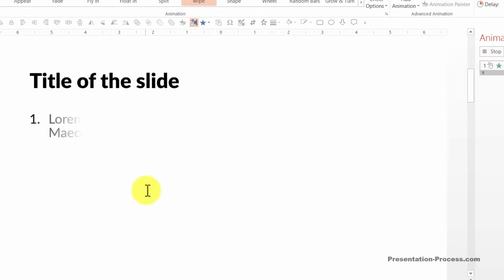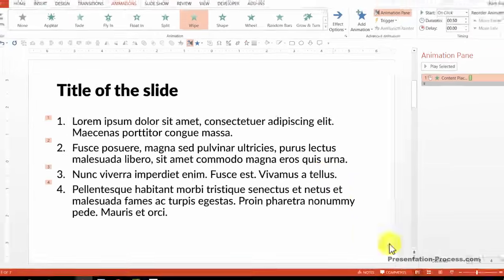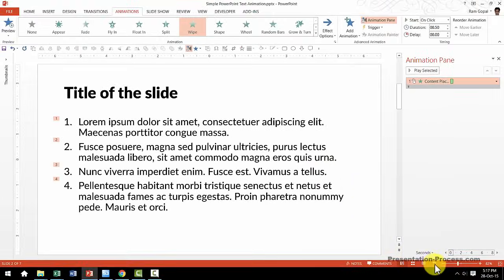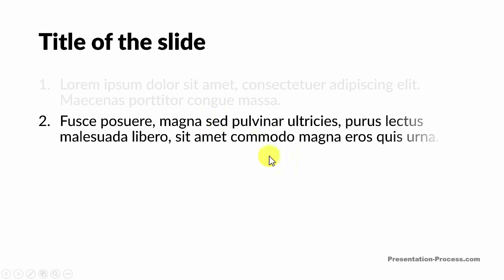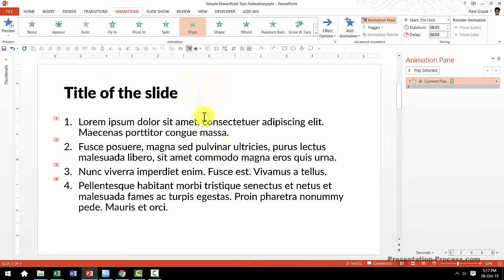That is the color to which the font will change after the animation event gets over. So let us say OK and now watch what happens: on the first click I have my text appear, on the second click the previous one gets dimmed out in the light gray color that we have just chosen. So that is how we did the first of the three tricks.